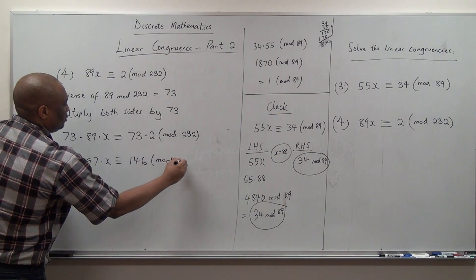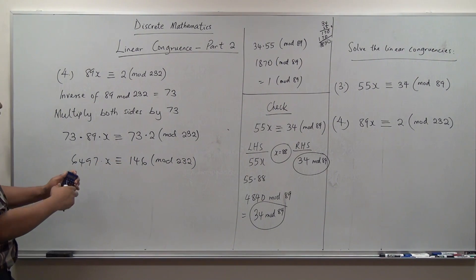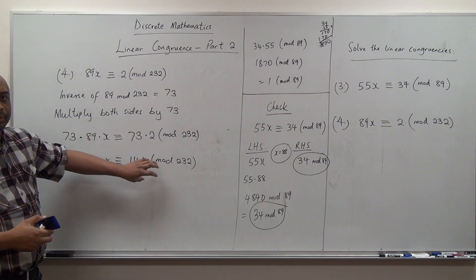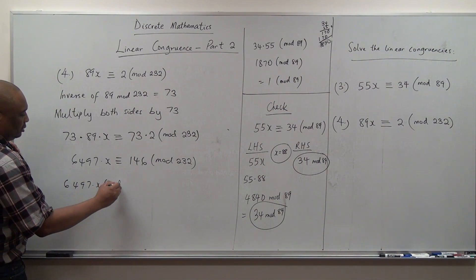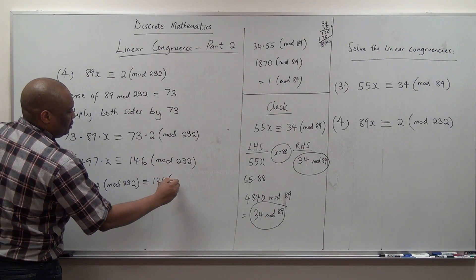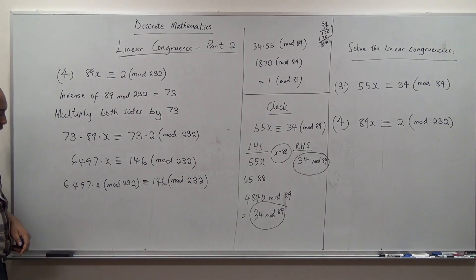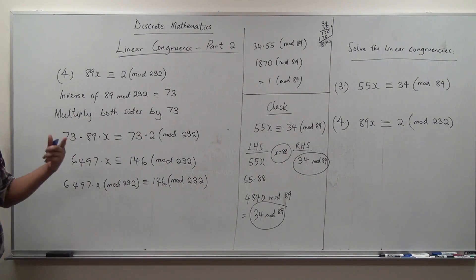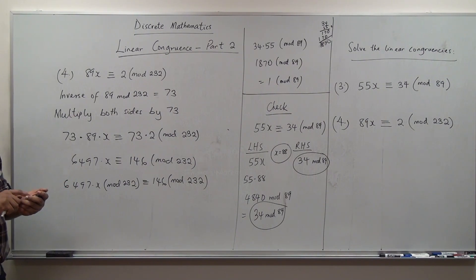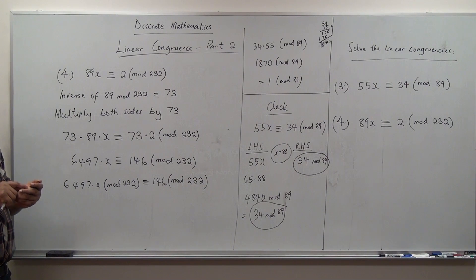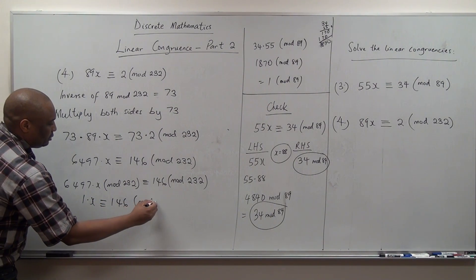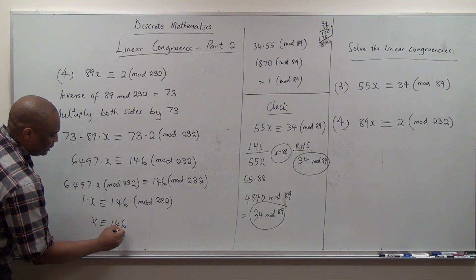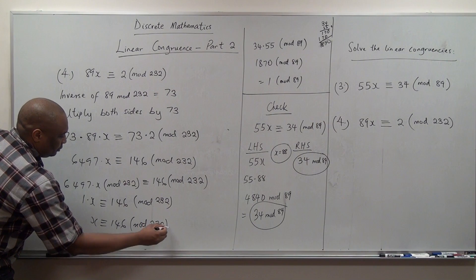We now do 73 times 89 equals 6497, and we compute 6497 mod 232. Since this mod 232 applies to both sides, we do 6497 divided by 232, which gives integer part 28. Then 232 times 28 is 6496, so 6497 minus 6496 equals 1. This means 1 times x is congruent to 146 mod 232, and therefore x is equivalent to 146 mod 232. That becomes your answer.